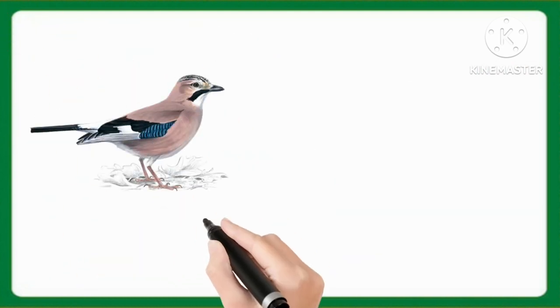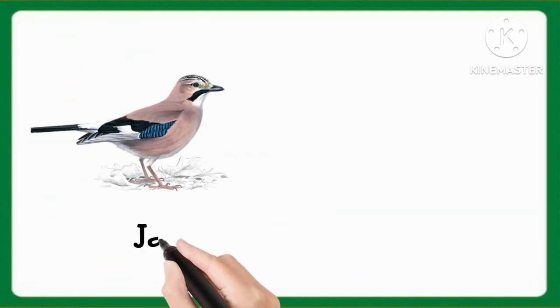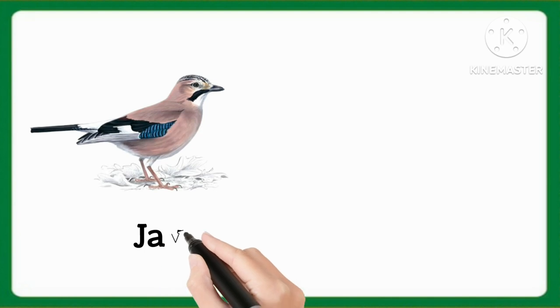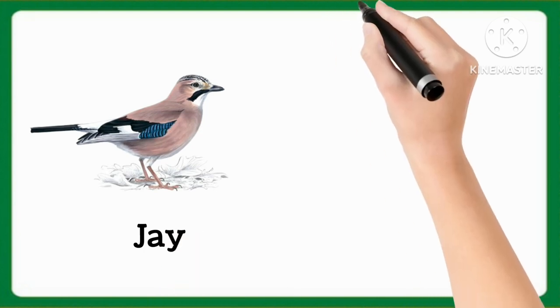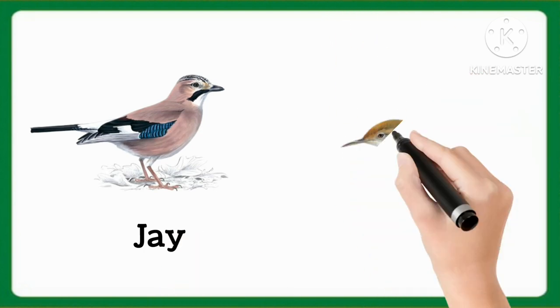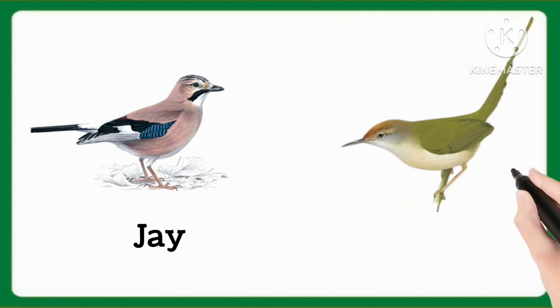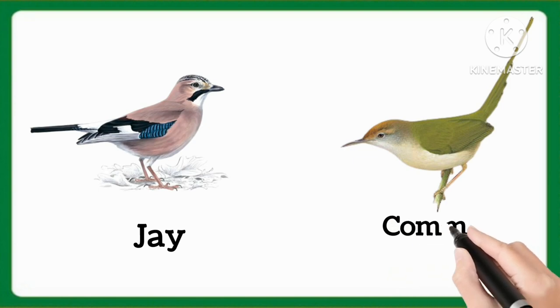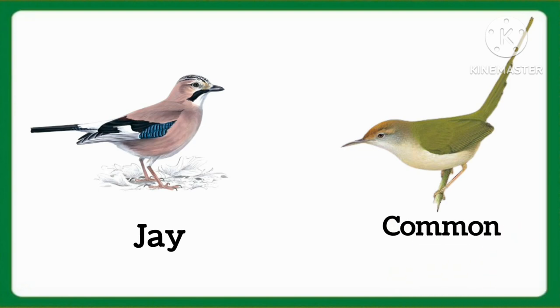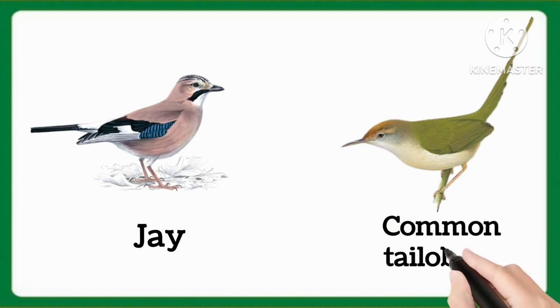And which word is this, kids? This is jay. And which word is this, kids? This is common-tail-o-bird. Common-tail-o-bird.